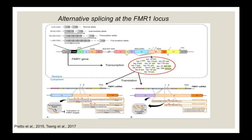If some of these alternative isoform proteins are produced, they are expected to be truncated proteins. For example, when exon 14 is skipped, a stop codon is created and part of the protein is missing. However, truncated proteins like these don't eliminate the protein entirely — there are some potential phosphorylation sites predicted by algorithms and they may still function as variants of FMRP.